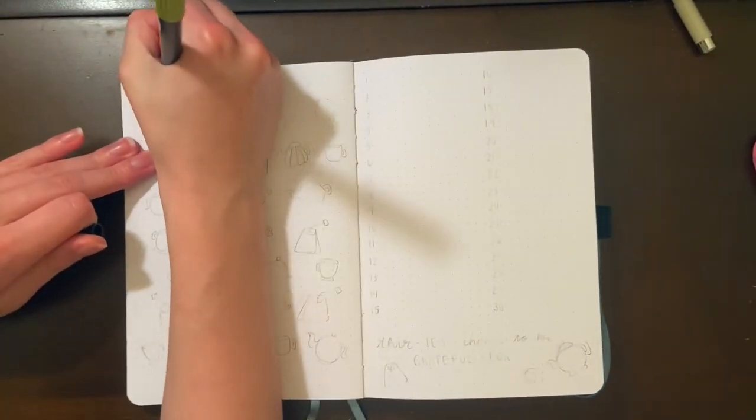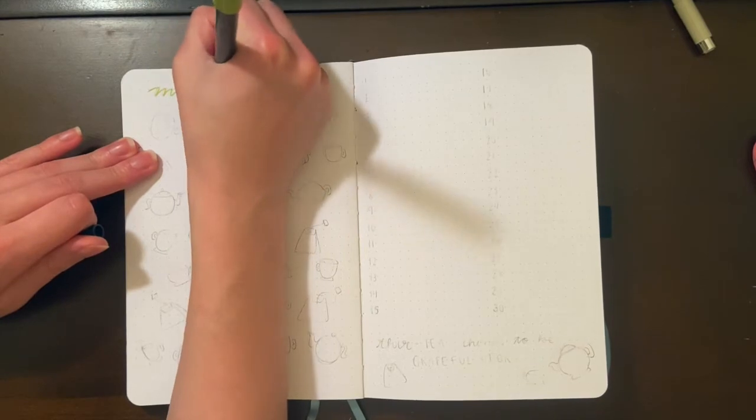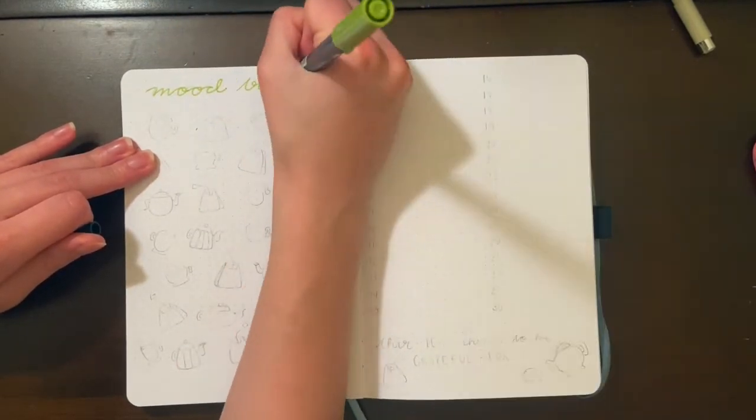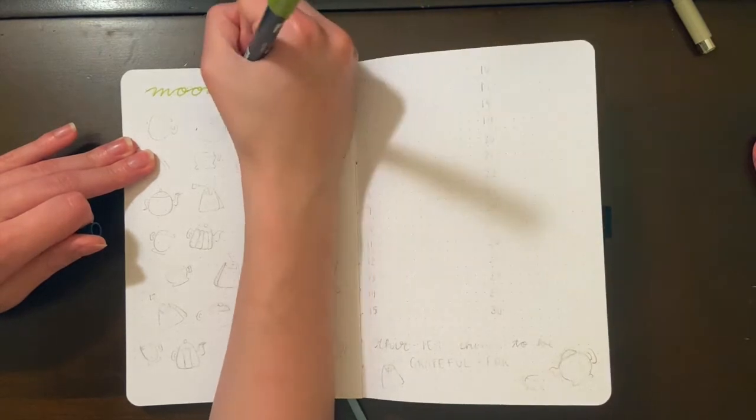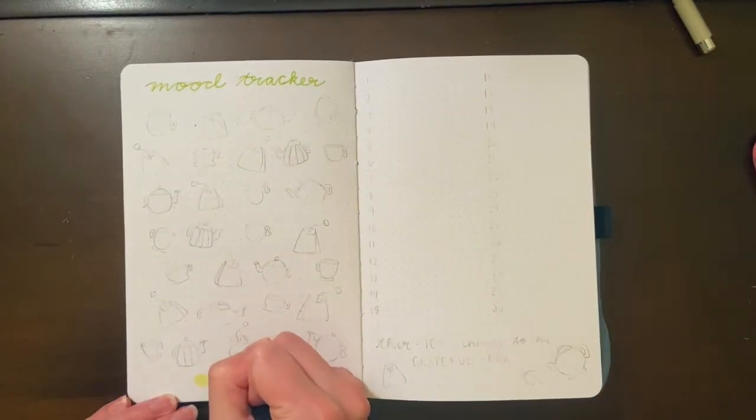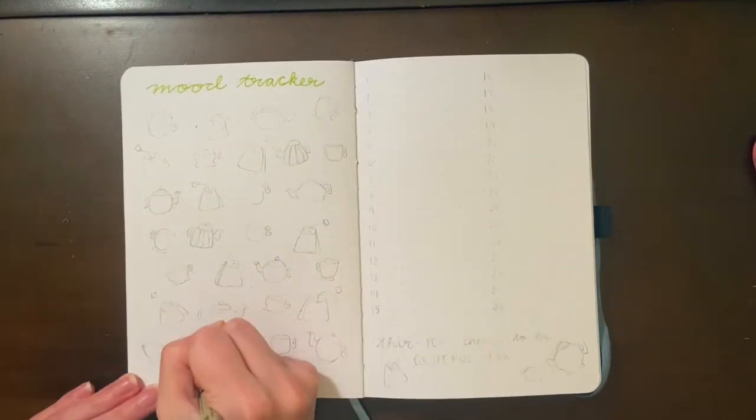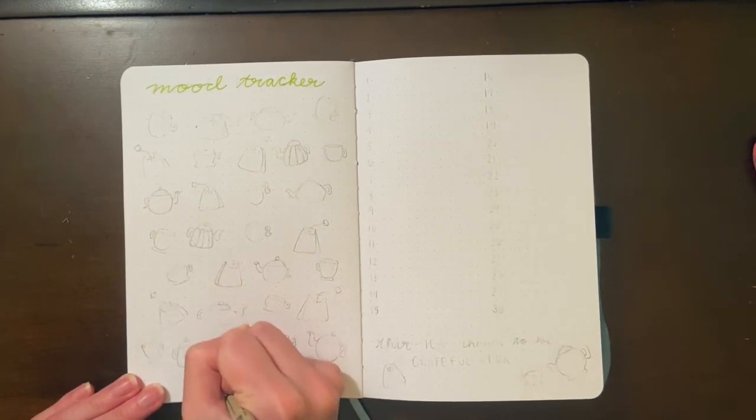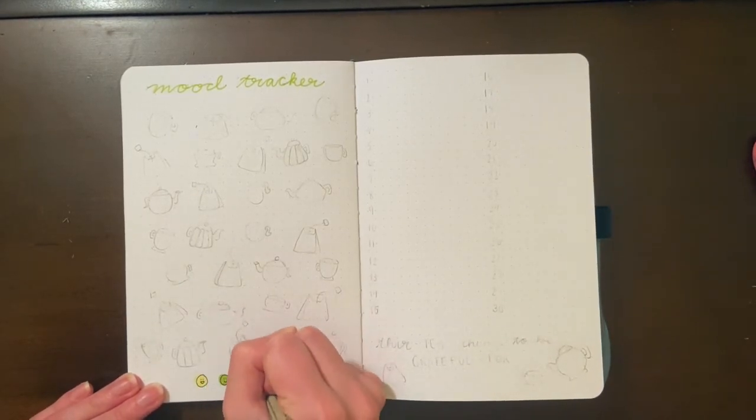For my next two pages, I have my mood tracker and a gratitude tracker. I did a gratitude spread for the first time in October, combining it with my mood tracker, and I liked doing that a lot. So for this month, I decided to separate them out and give my gratitude space its own full page.